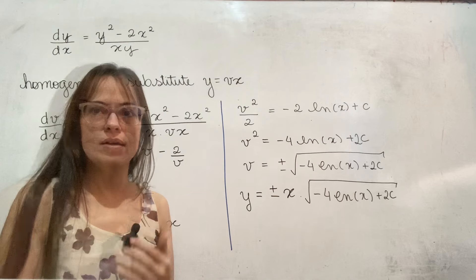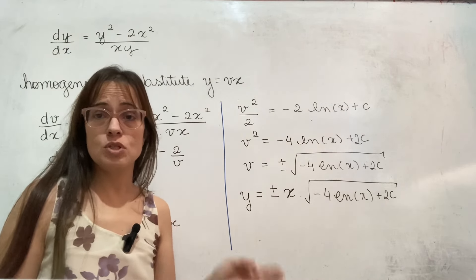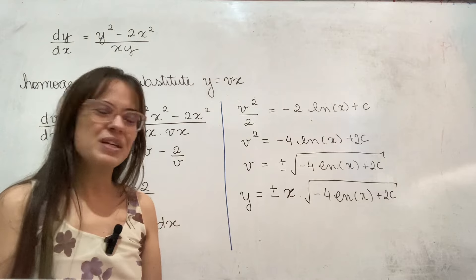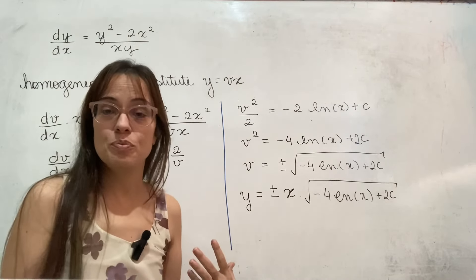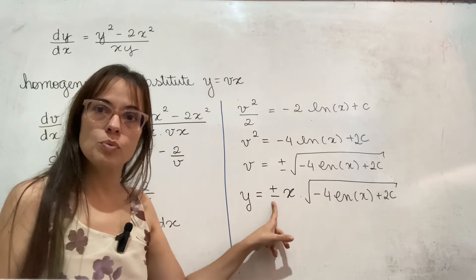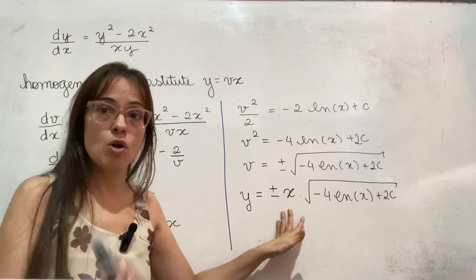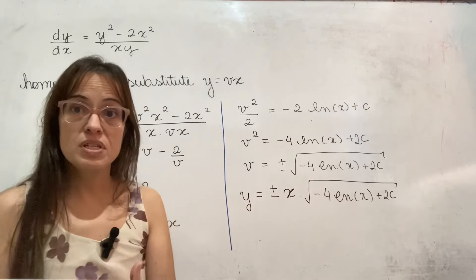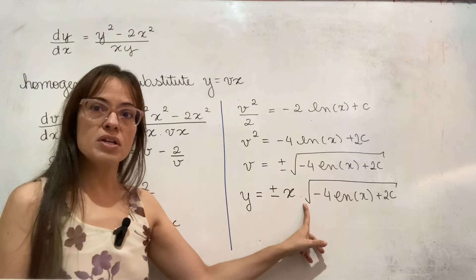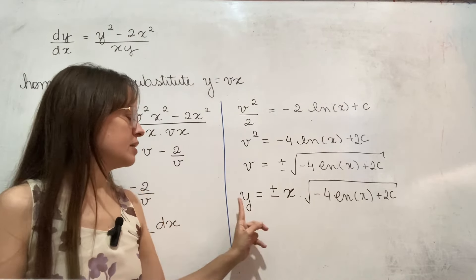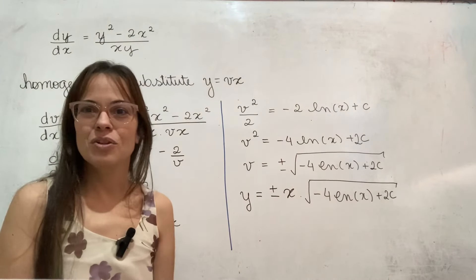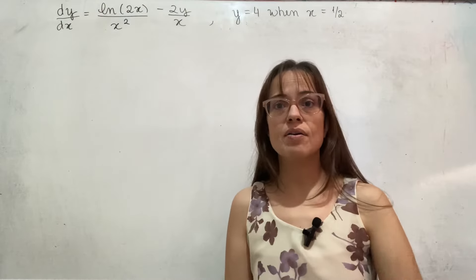Unfortunately this problem didn't give us a specific point to figure out the value of c, and it also wouldn't have been straightforward because there is a plus or minus here. The specific point would help us determine both the value of the constant c and which sign to choose — plus or minus — since the square root is always positive. If you had a positive x and positive y you want the plus, but if you had a negative x and positive y you would want the minus.